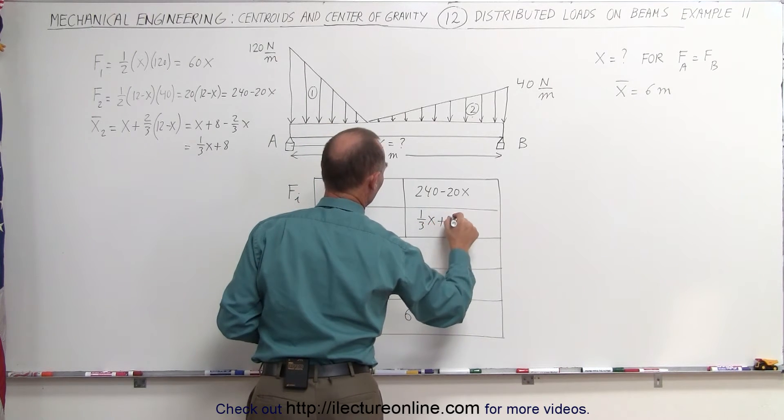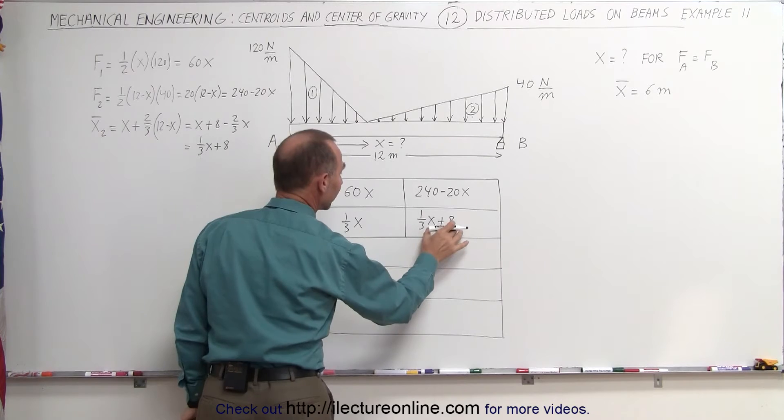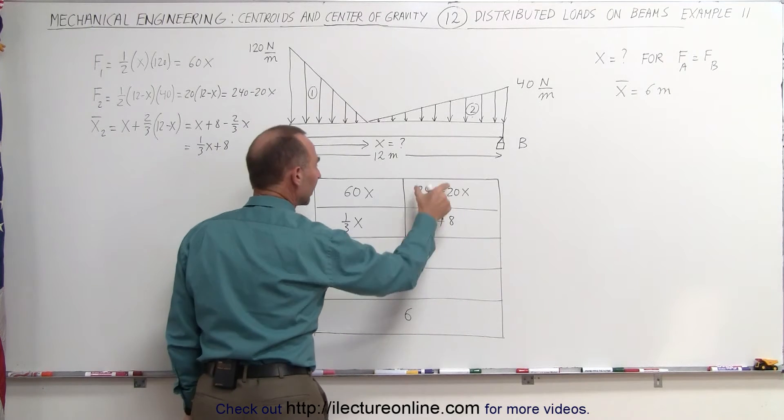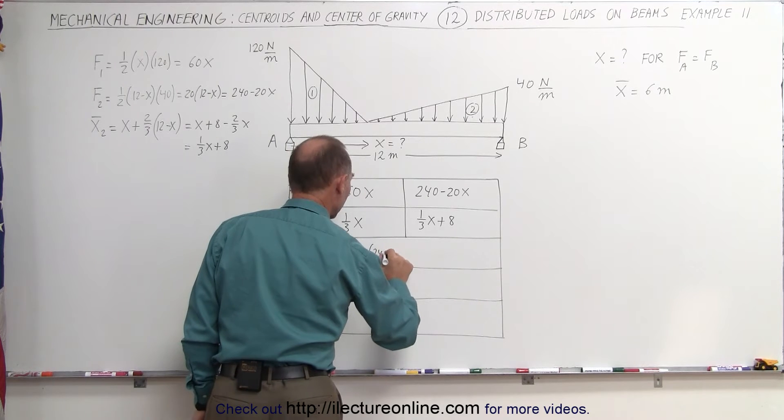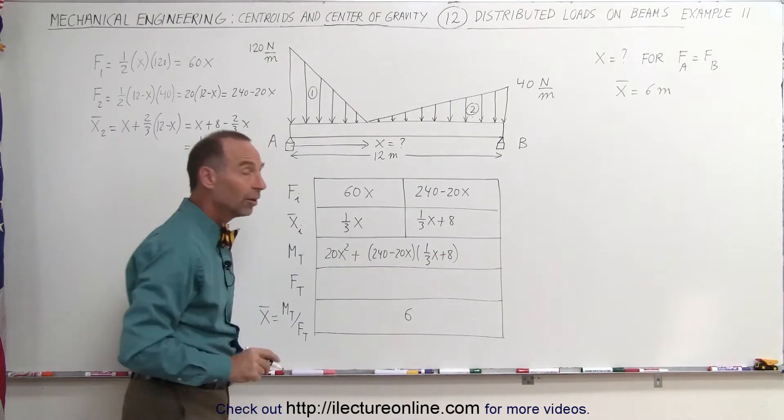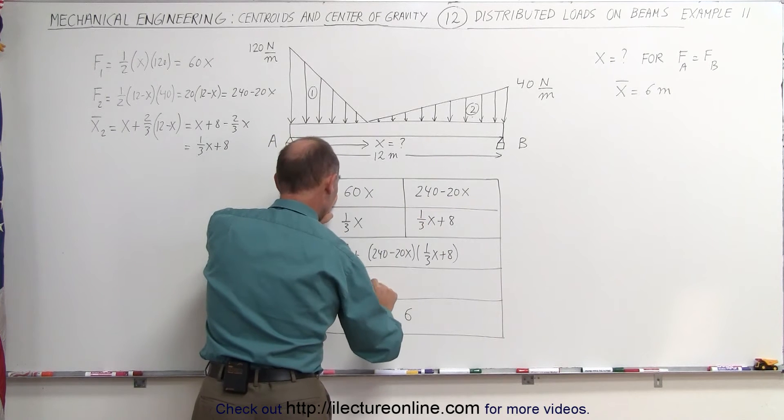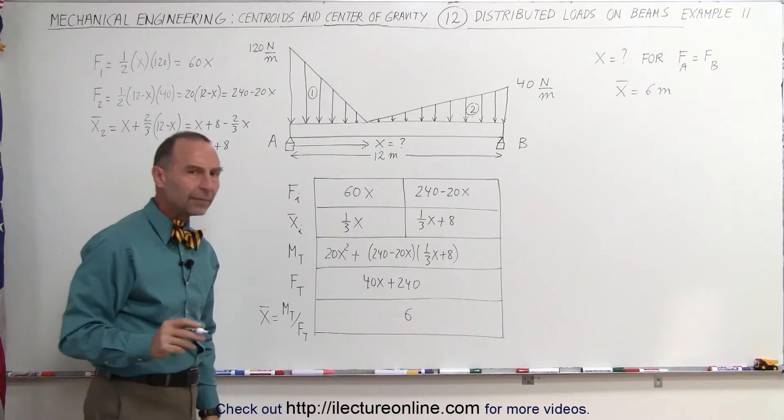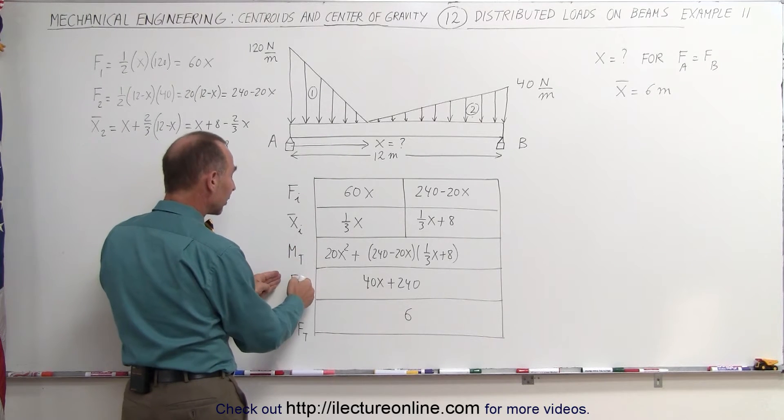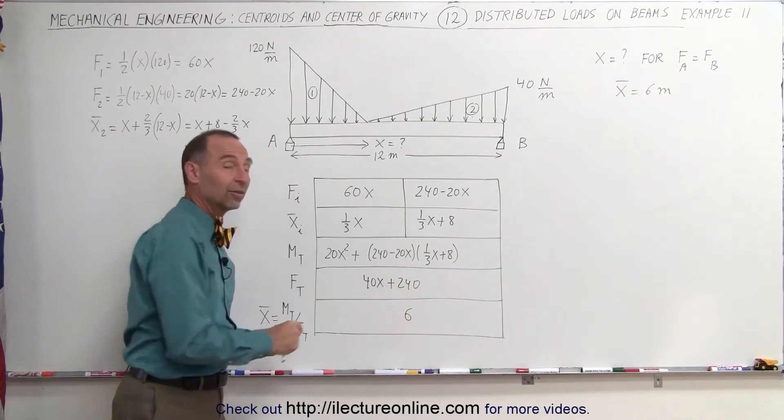Now we're ready to find the total moment. That can be found when multiplying this times this, and adding that when we multiply this times this. So let's go ahead and do that. One-third x times 60x is 20x squared, plus multiply these two together, we'll just leave them as a multiplication, 240 minus 20x multiplied times one-third x plus 8. That's the total moment. Now we need to find the total force, which is adding this plus this. 60x minus 20x is 40x plus 240. And finally, we'll find the x-coordinate of the centroid by taking the total moment and dividing by the total force to give us 6.